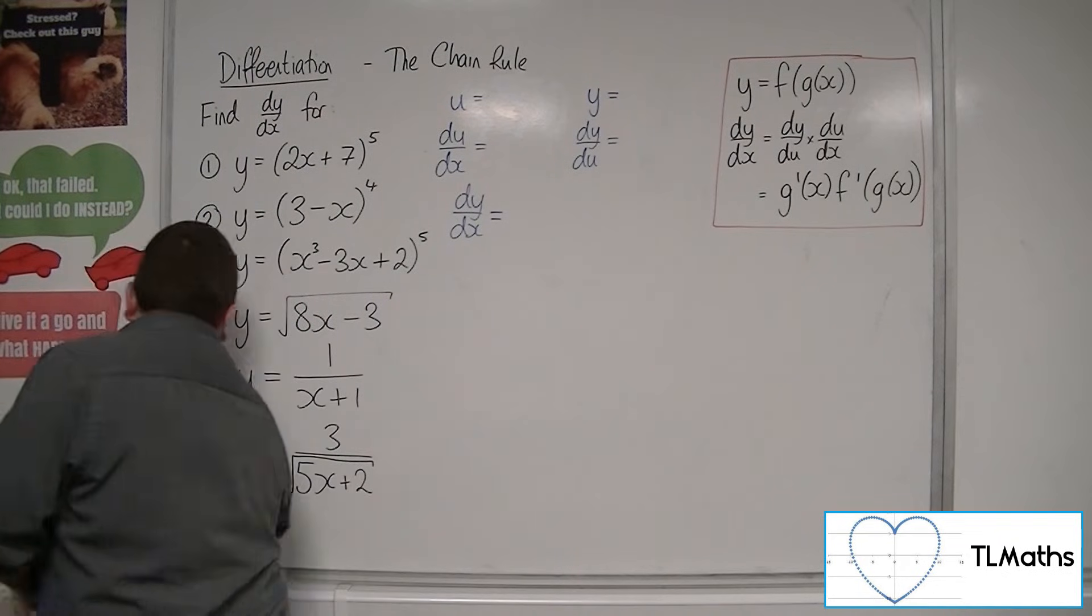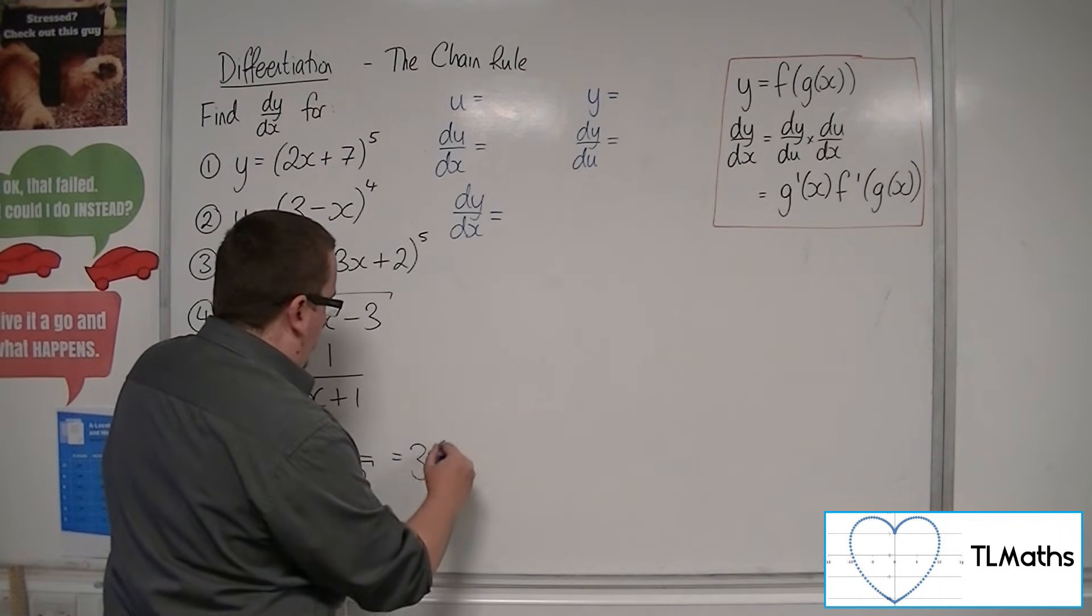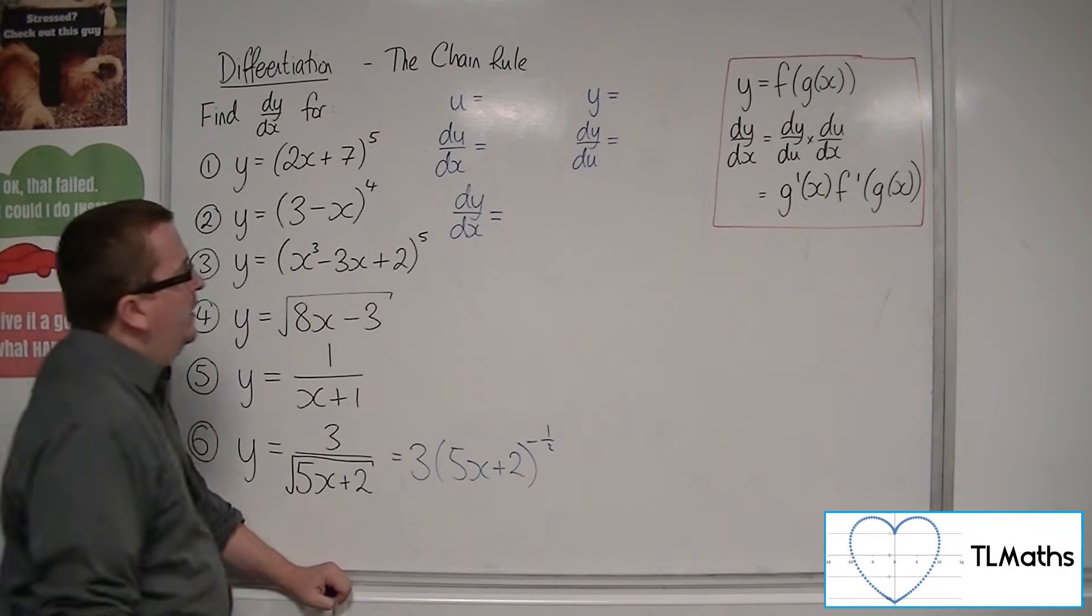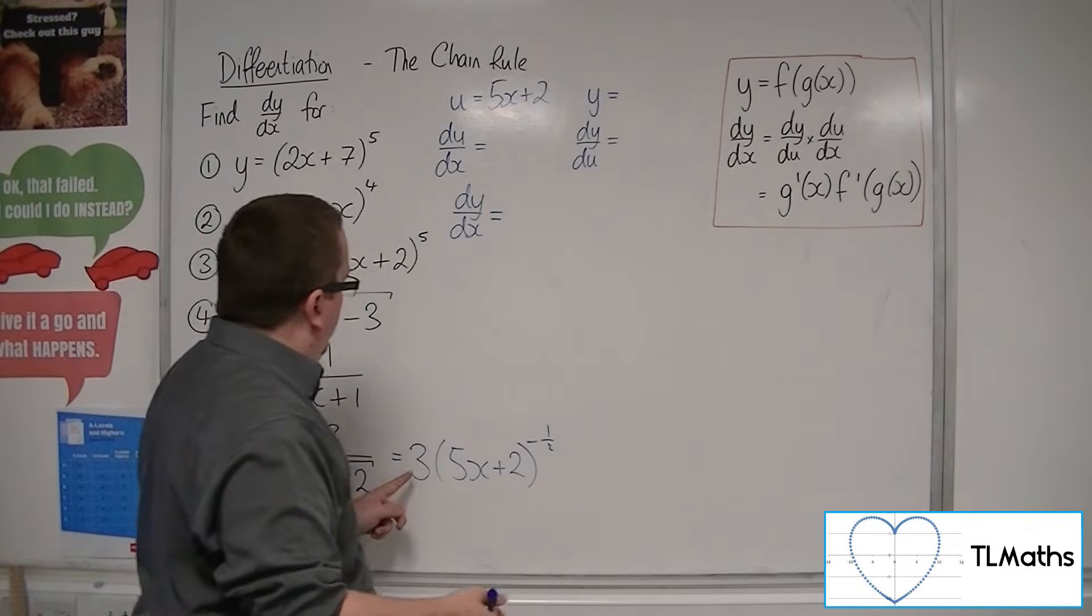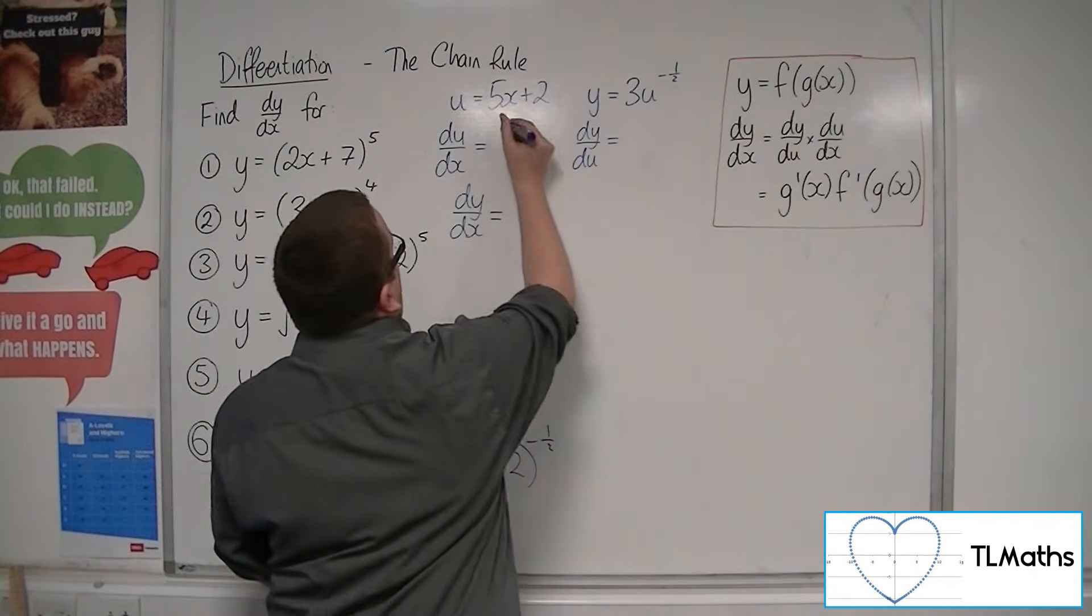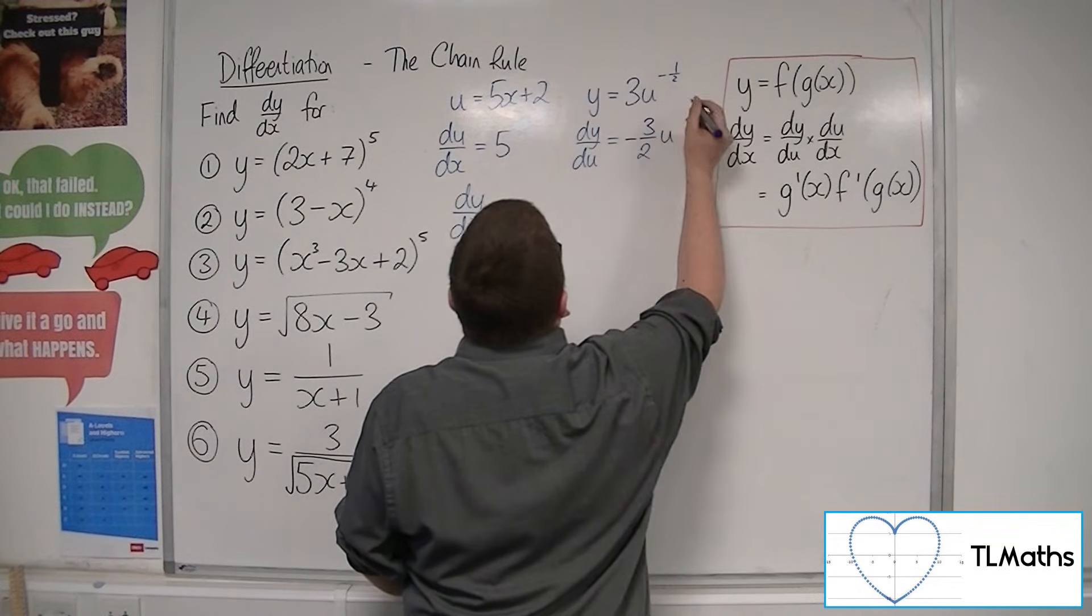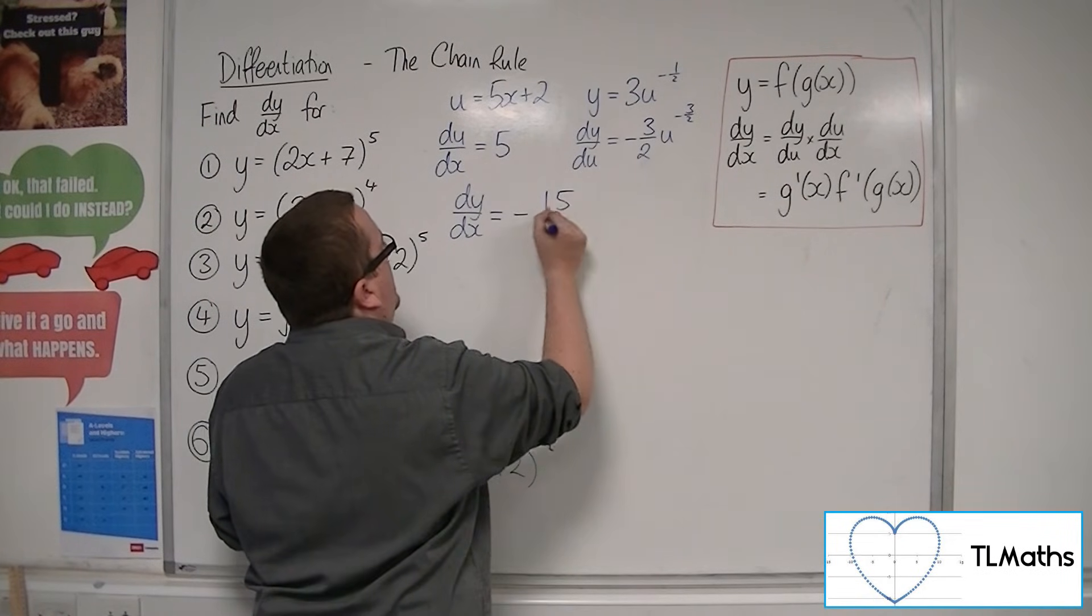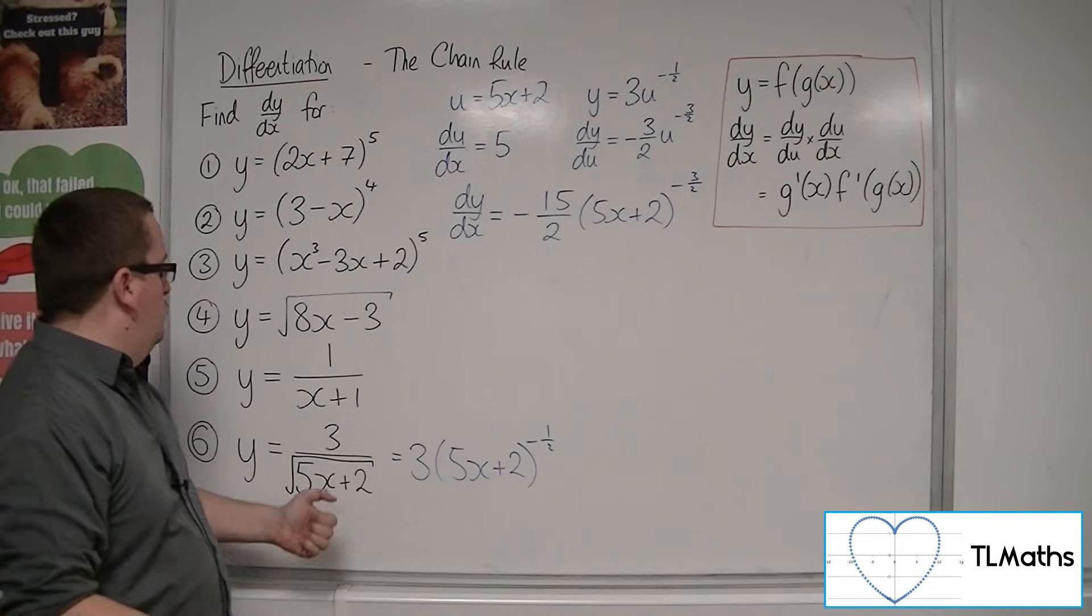So that leaves us with number 6. So y equals 3 over the square root of 5x plus 2. So I'm going to rewrite it as 3 lots of 5x plus 2 to the minus 1 half. These are the same thing. So the 5x plus 2 is what's inside the bracket. That is my u. The y therefore is 3u to the minus 1 half. So du by dx will just be 5. dy by du, the minus 1 half comes down and multiplies with the 3. So minus 3 halves u. And then take one off the power, so minus 3 halves. So dy by dx is the product of these two. So we'll have minus 15 halves u to the minus 3 halves. And that is the derivative of number 6.